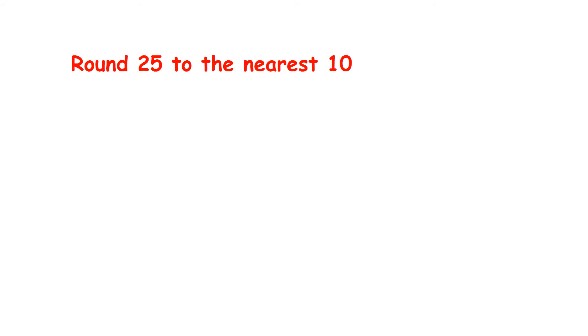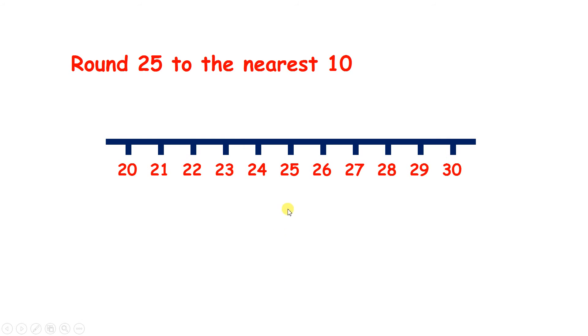So now pause the video and see if you can round 25 to the nearest 10. Well, 25 is right in the middle of 20 and 30, and when we're in the middle, we always round up. So 25 rounded to the nearest 10 is 30.